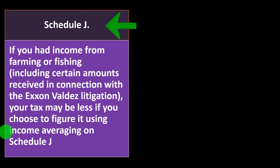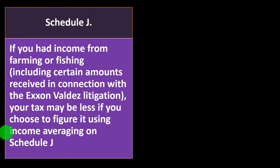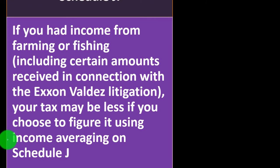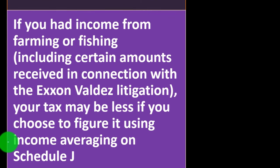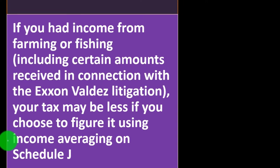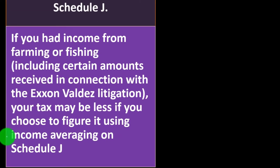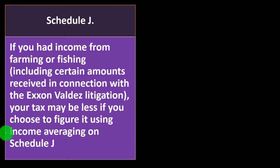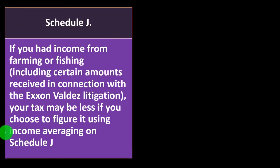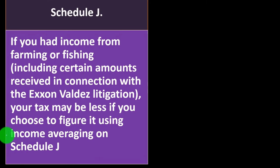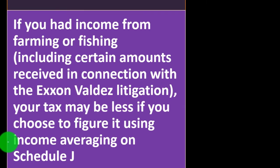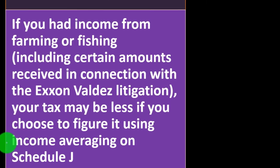Schedule J: if you had income from farming or fishing — including certain amounts received in connection with the Exxon Valdez litigation — your tax may be less if you choose to figure it using income averaging on Schedule J.